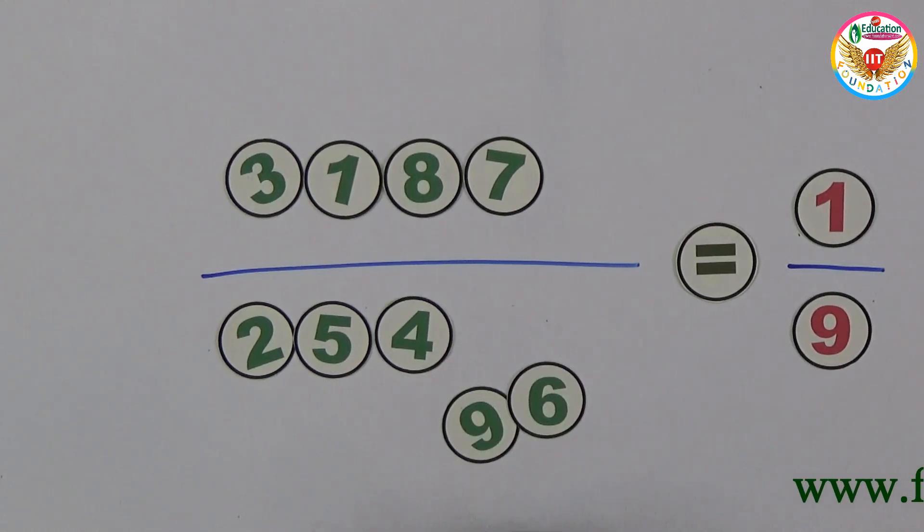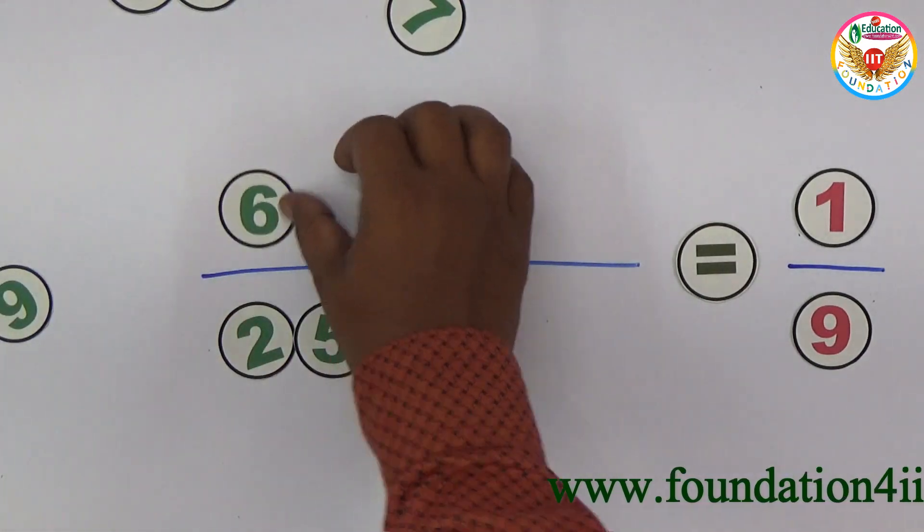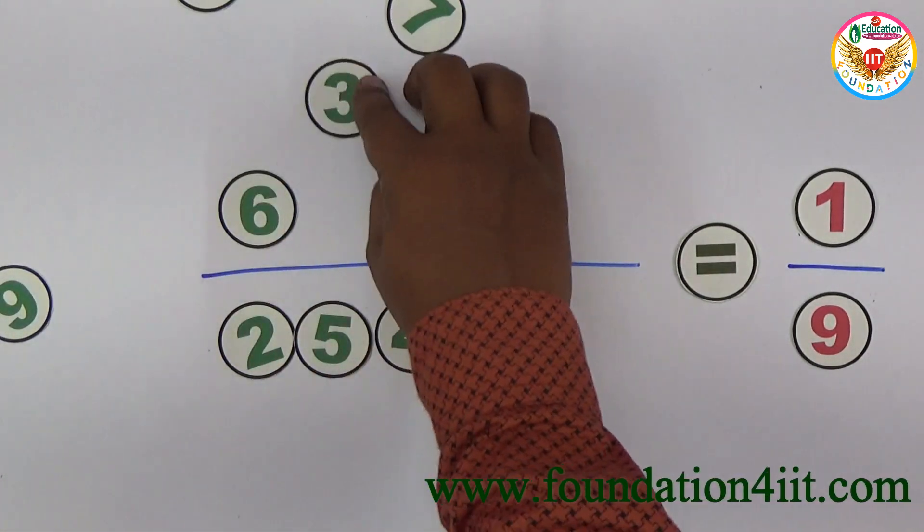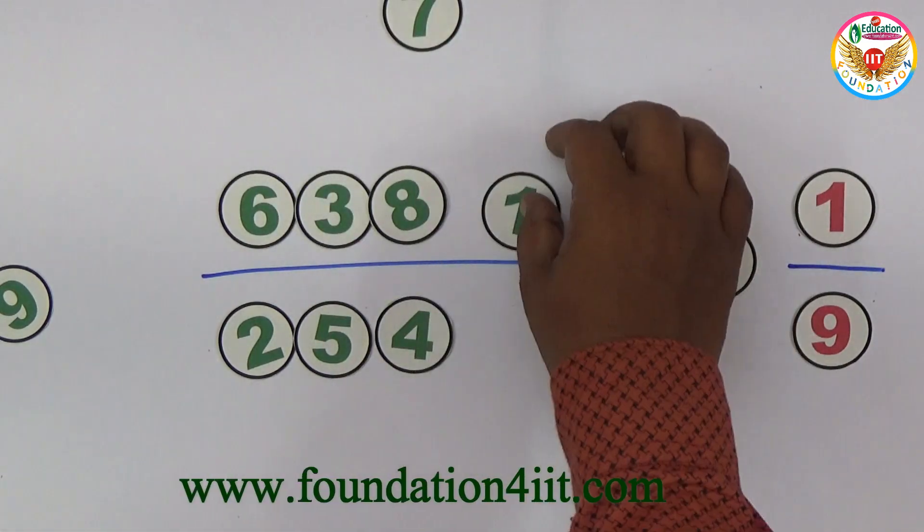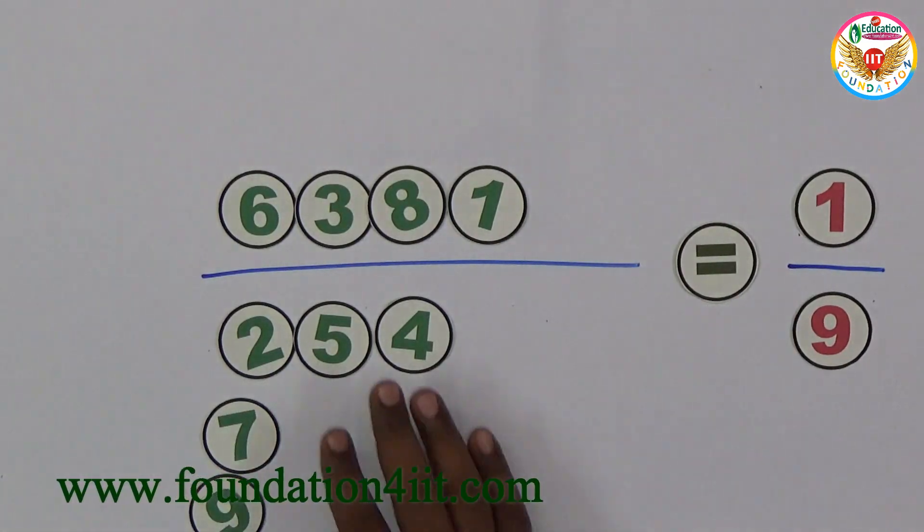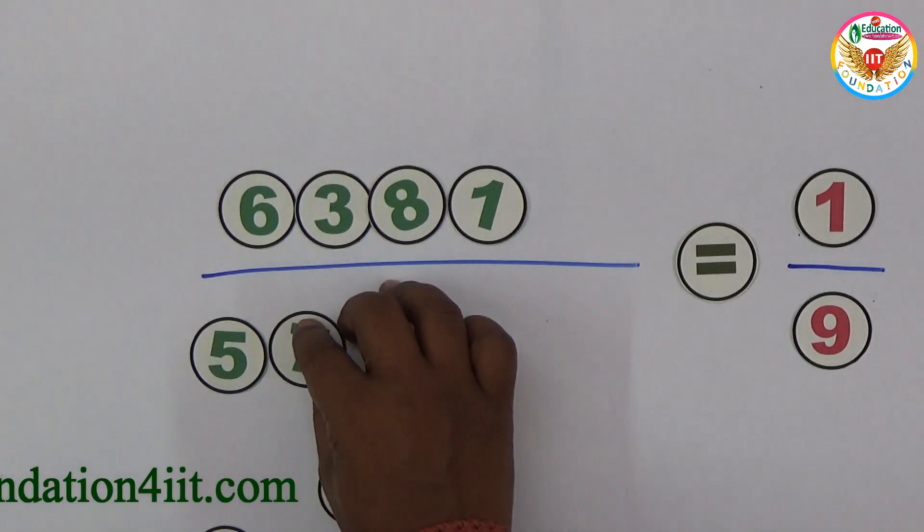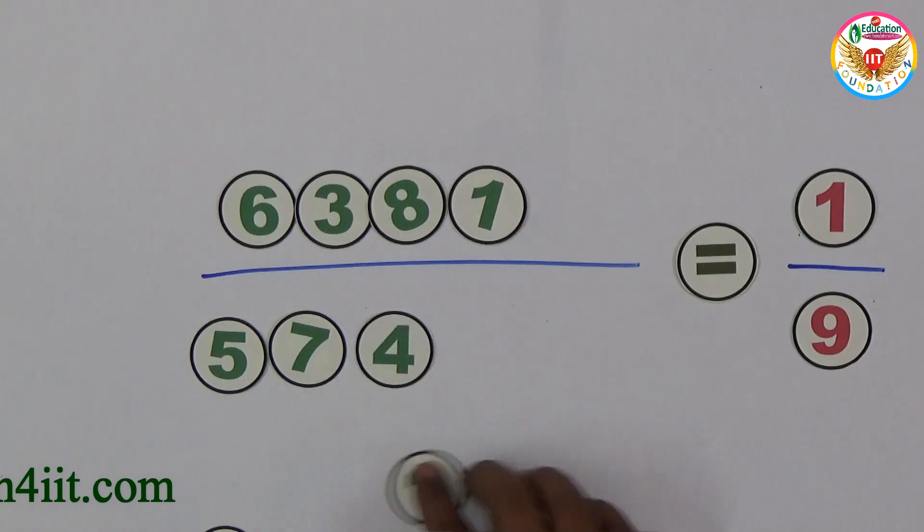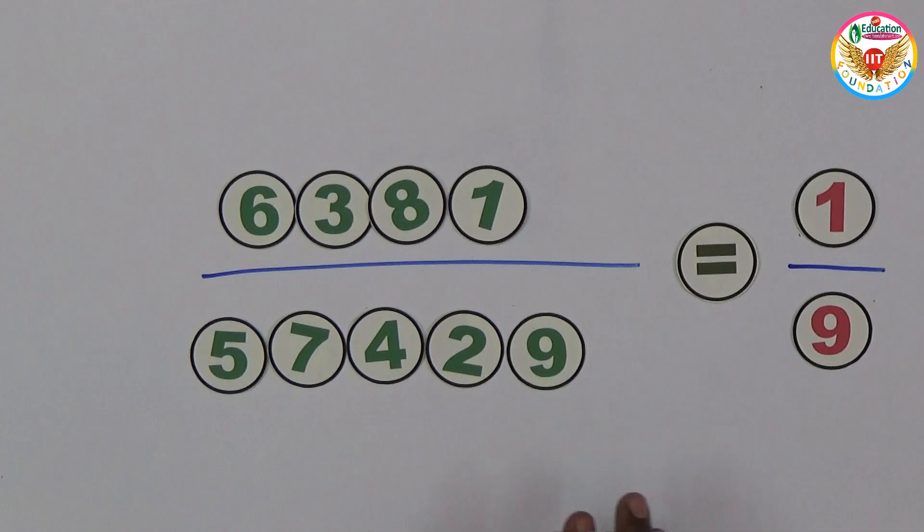Last one is to get 1/9. For this, take 6381 in the numerator place. That is 6381 divided by, the denominator is 9 times, so 57429. This is the solution to get 1/9. These are the solutions of unusual fractions and digits to obtain the fractions 1/2 to 1/9.